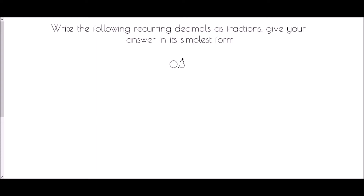In today's video we're going to look at how we can turn a recurring decimal into a fraction, and we're going to do this algebraically. I'm going to begin with a recurring decimal you should already be familiar with: 0.3 recurring. You should know already that that is the fraction one third, but the question is why? Because it's something we don't yet know, I'm going to call it x.